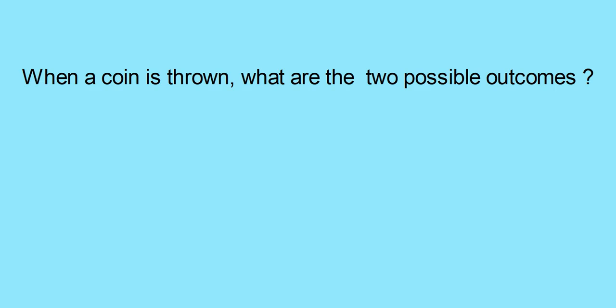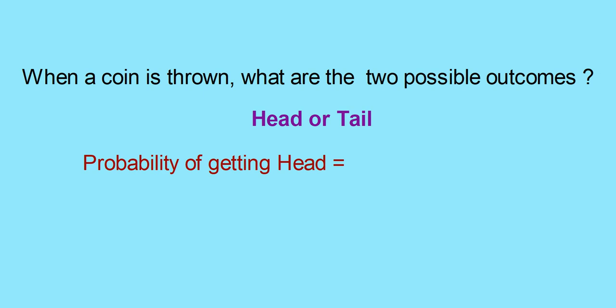Now let us look at what probability is. When a coin is thrown, what are the two possible outcomes? Then what is the probability of getting a head? Here you have two possible outcomes — head or tail. Out of this, probability of getting a head means it is 1 out of 2. So we can write it as 1 by 2.